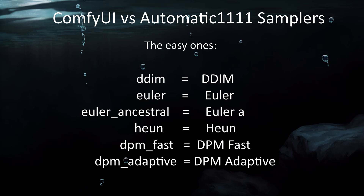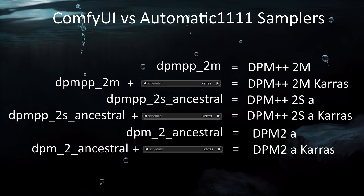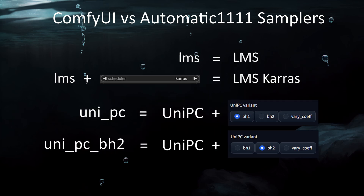Since ComfyUI is very popular right now, here's a chart showing how the sampler names in ComfyUI correspond to Automatic1111. Overall, it's pretty straightforward, except Comfy does not have Karras versions. Instead, Karras is defined by the noise scheduling. But enough trivia — let's move on to something more concrete.